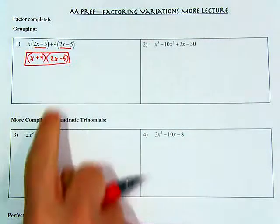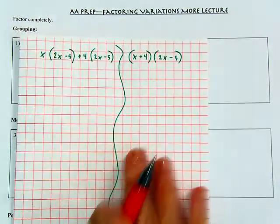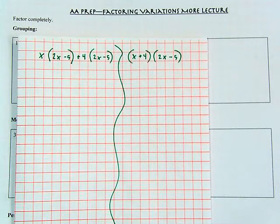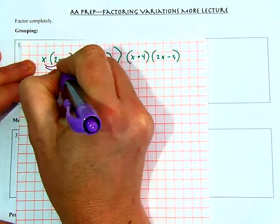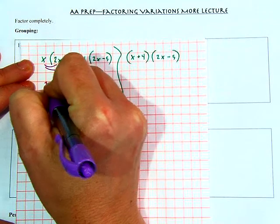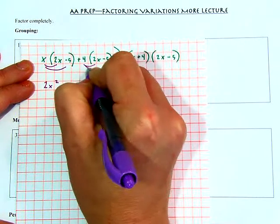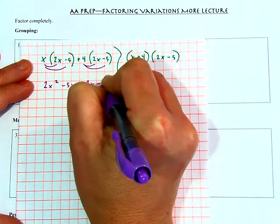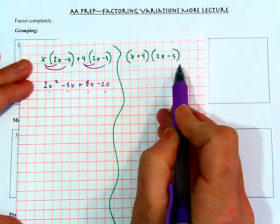I always get a lot of questions about a problem like this, so I want to show you how those structures are really the same. I've written it out both ways — how the problem started and how I factored it. So let's say that I want to put them both back into standard form. I'm going to distribute this x over the 2x minus 5, which gives me 2x squared minus 5x, and I'm going to distribute that 4 over the same 2x minus 5, so now I have plus 8x minus 20. You can see those four different pieces that emerge.